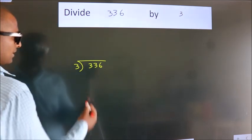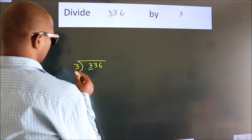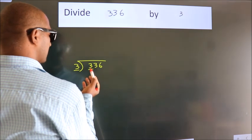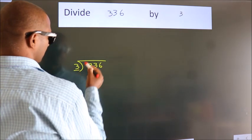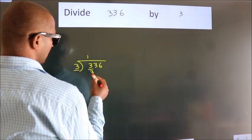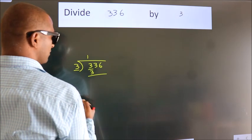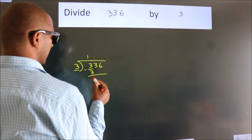Next. Here we have 3. Here 3. When do we get 3? In the 3 table, 3 once is 3. Now, we should subtract. We get 0.